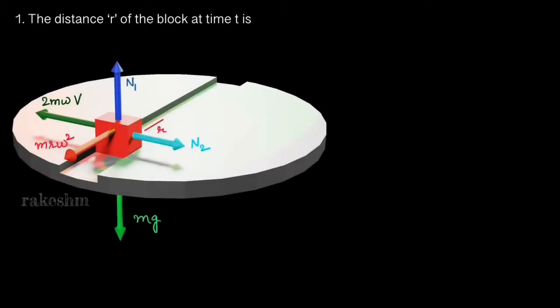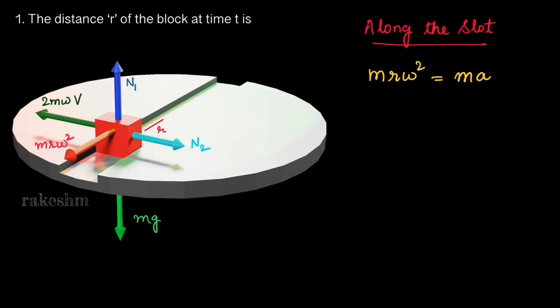The first question asks for the distance r of the block at time t. In the rotational frame, the block moves along the slot, and the only force acting along this direction is m·r·ω². Along the slot, net force equals mass times acceleration. Cancelling m from both sides, we get a = r·ω².